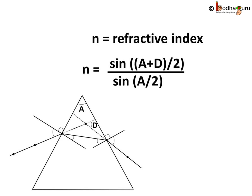You know, the refractive index of the material of prism is given by the formula sin of half of A plus D divided by sin of A by 2. Here, A is angle of prism and D is angle of minimum deviation.